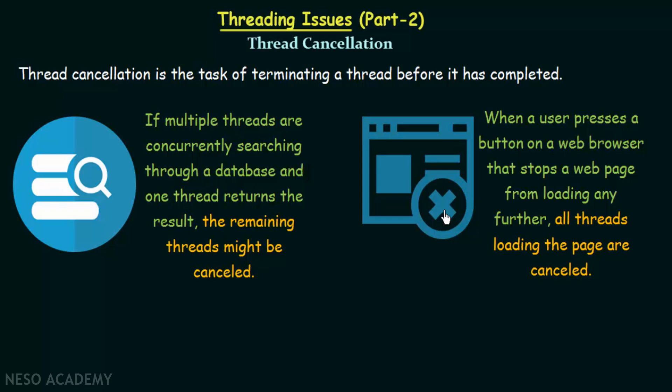A webpage may contain images, text, hyperlinks, and many other elements. Different threads are responsible for loading each of these elements, and all these threads work together to load the entire webpage. If you press the button that stops the loading, all threads involved in loading those different elements will be cancelled — terminated before completing. That is another example where we can see cancellation of threads.